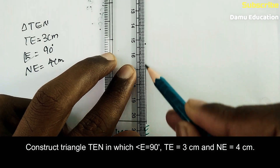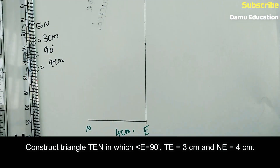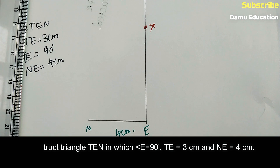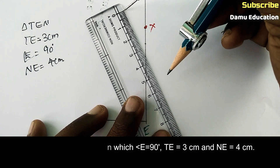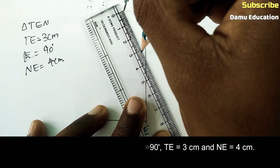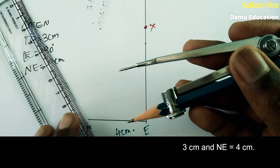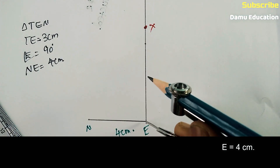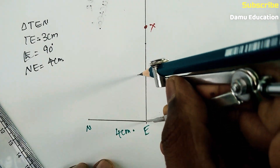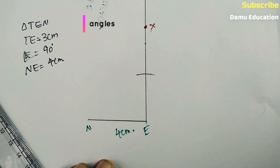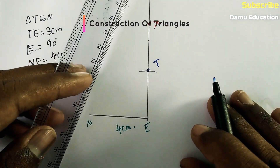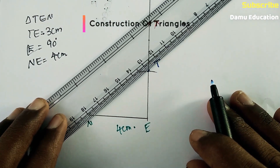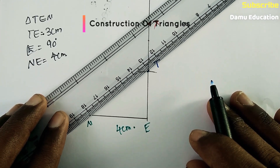Draw a ray from E — label it EX. Then draw an arc with radius 3 centimeters, centered at E, so that it coincides with ray EX. That point of intersection is T.